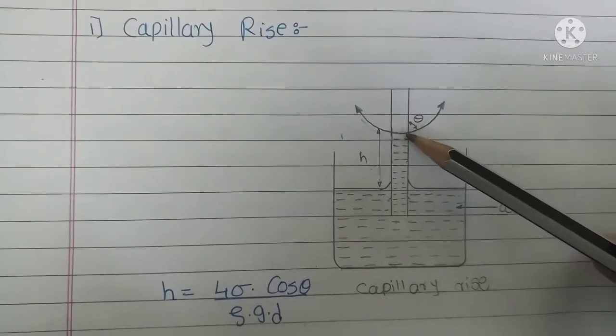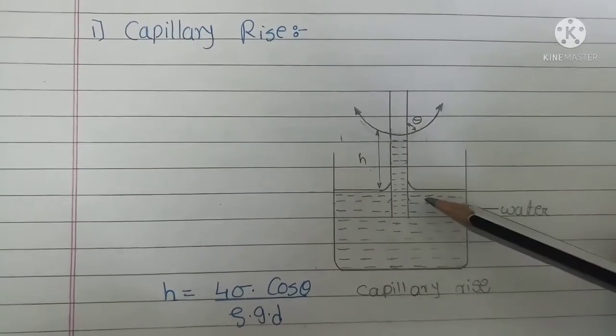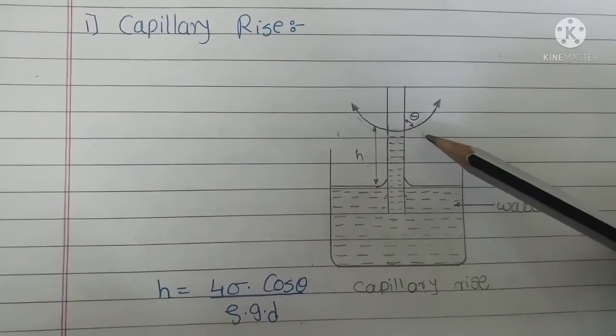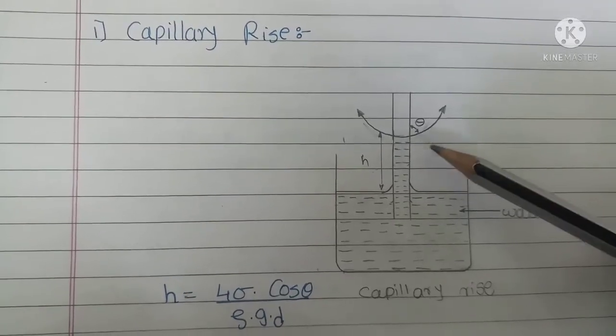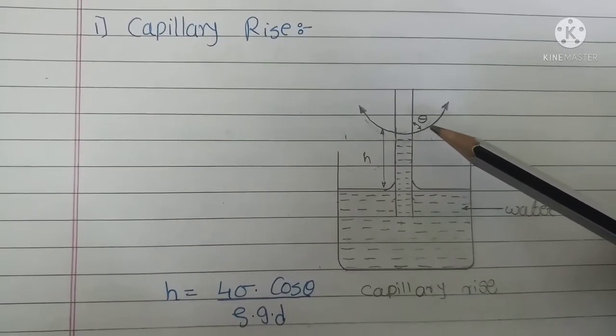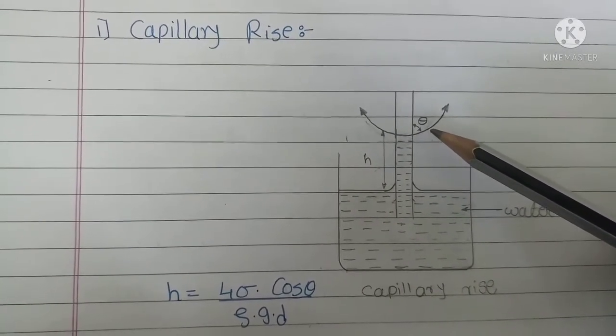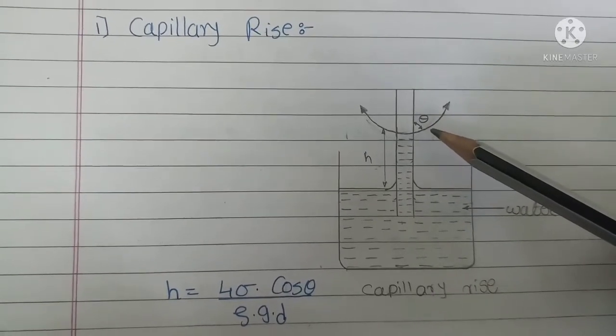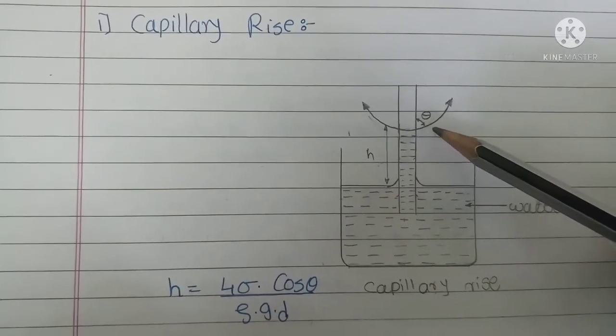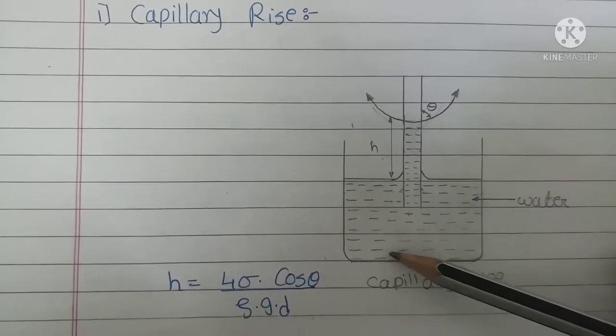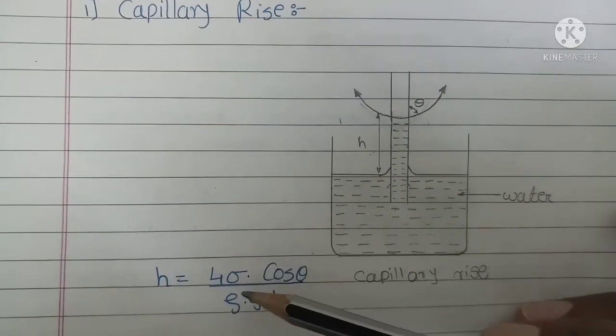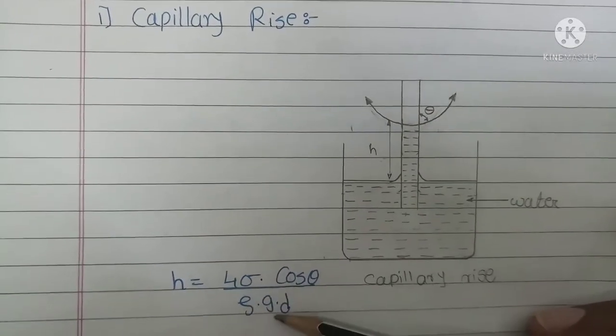The tube level is above the water level, showing the capillary rise. Theta is the contact angle. For water, theta is 0 degrees, so cos theta equals 1. The final formula becomes: h equals 4 sigma divided by rho times g times d.